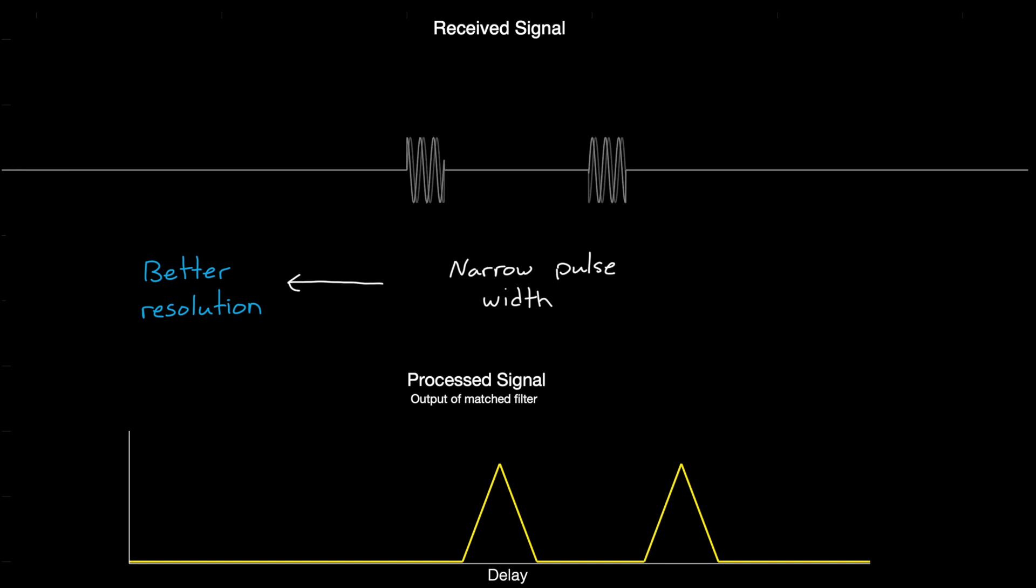But what we gain in resolution, we lose in signal to noise ratio. And this is because if the radar sends out the same power level, but for a shorter amount of time, then there's less overall energy being transmitted per pulse, and therefore less signal is being returned from the object. And with that lower signal comes a lower maximum range, as those far away objects will now drop below the detectable signal to noise ratio. So we have this trade-off between SNR and resolution.